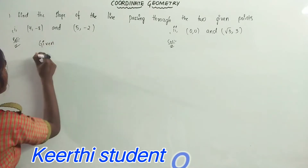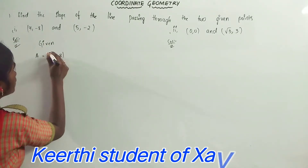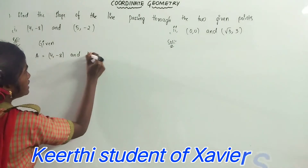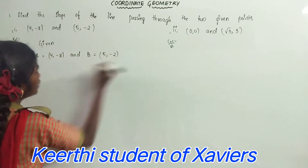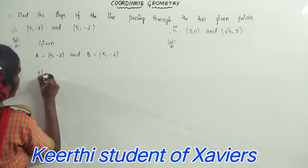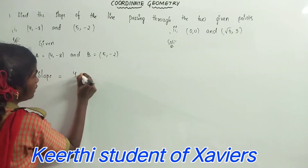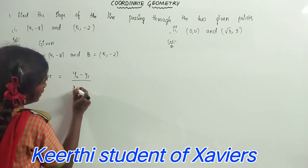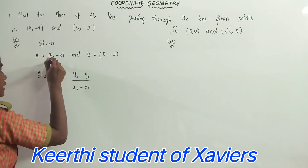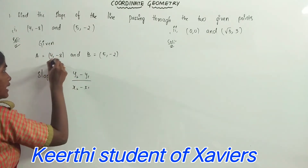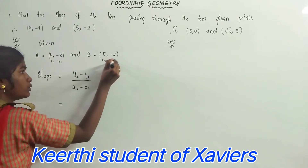Given: A is equal to (4, -8) and B is equal to (5, -2). Slope is equal to y2 minus y1 by x2 minus x1. Here x1, y1, x2, y2 are identified from the points.